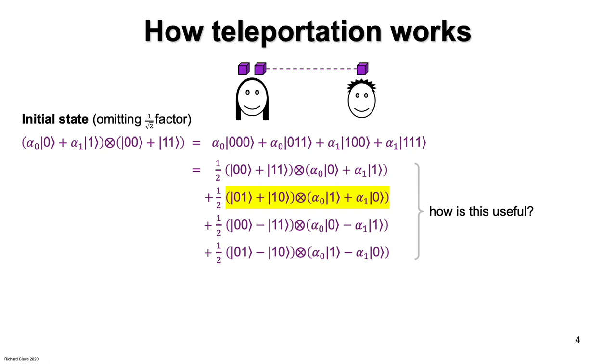Let's look at the second line. There, Alice has a different bell state and Bob doesn't quite have the state that he's supposed to have. It's not quite the qubit because the ones and the zeros are flipped. But if Bob were to apply a Pauli X gate, then that would turn the state into alpha zero ket zero plus alpha one ket one. The third line, again, Alice has a bell state and Bob has a slightly modified version of the state. And in this case, the correction could be achieved by applying a Pauli Z gate. And in the fourth line, Alice has the fourth bell state and the correction on Bob's side would be to apply a Pauli X and a Pauli Z.